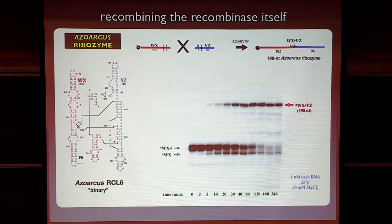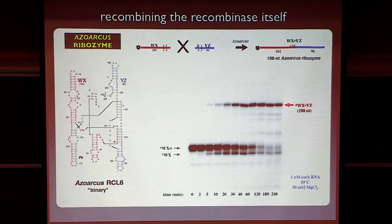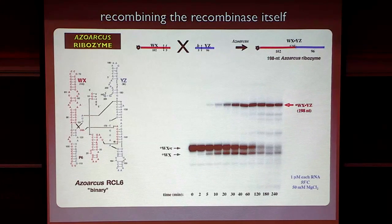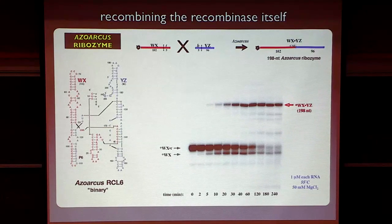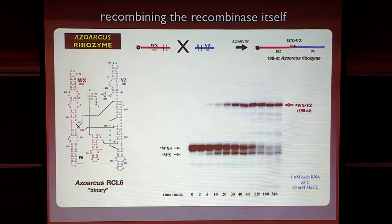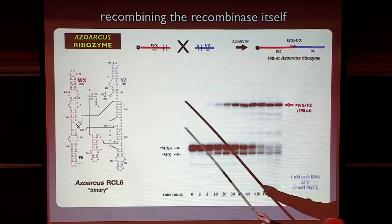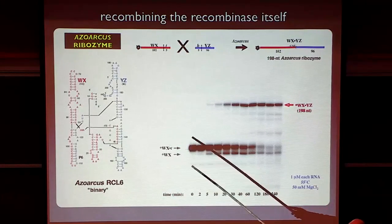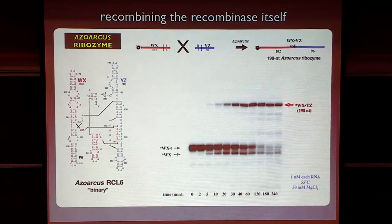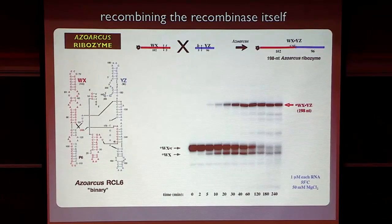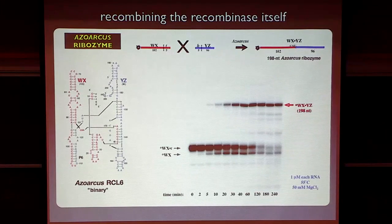So what about self-replication? What we did is that we said, well, we don't care about RNAs recombining other RNAs, other little scraps of RNA. We care about RNAs recombining themselves. So we took the azoarchus ribozyme and broke it into two pieces. A five prime half in red, a three prime half in blue.